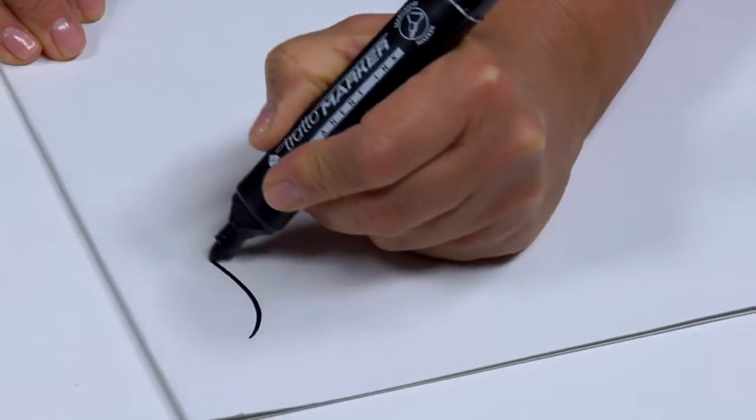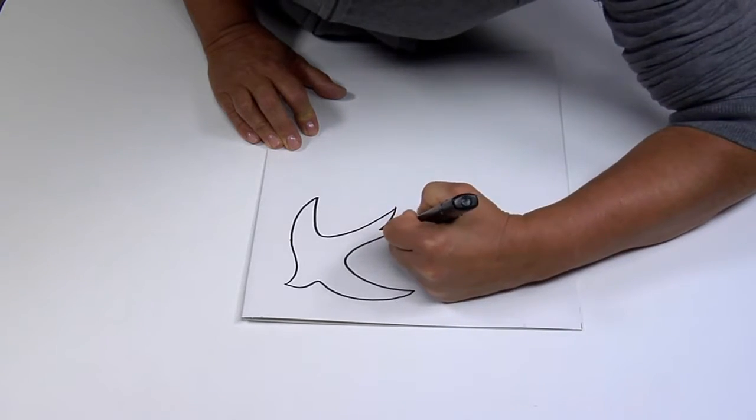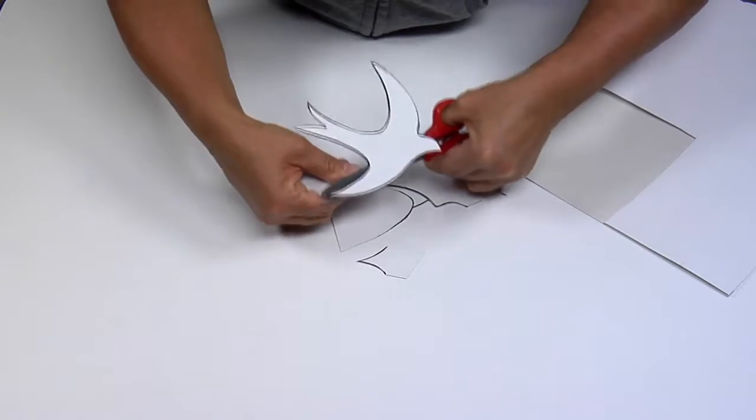At this point, create a pattern with the elements you'll apply to embellish the plate. We have chosen to make swallows of different sizes.